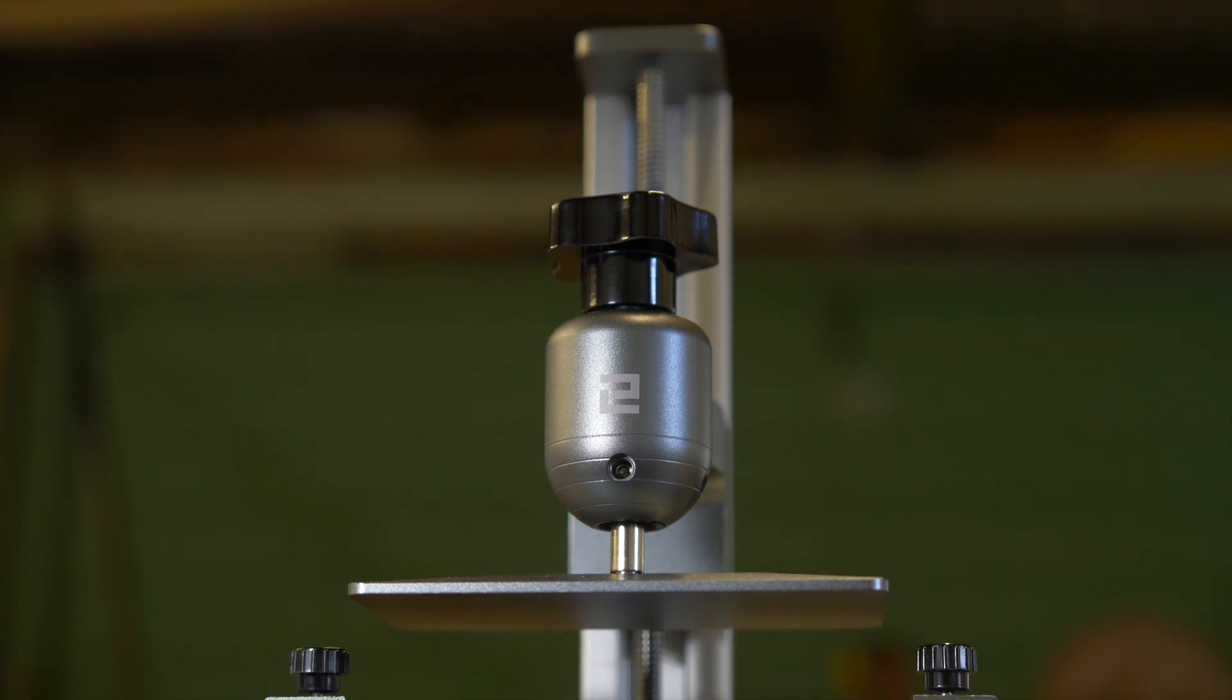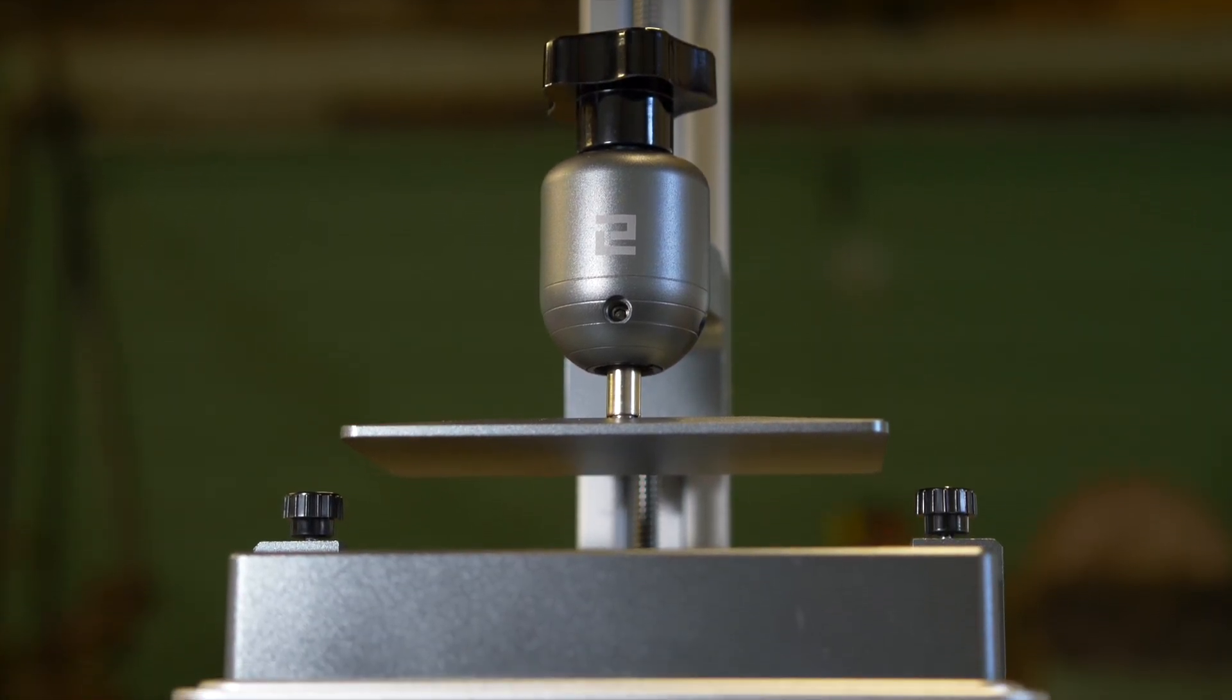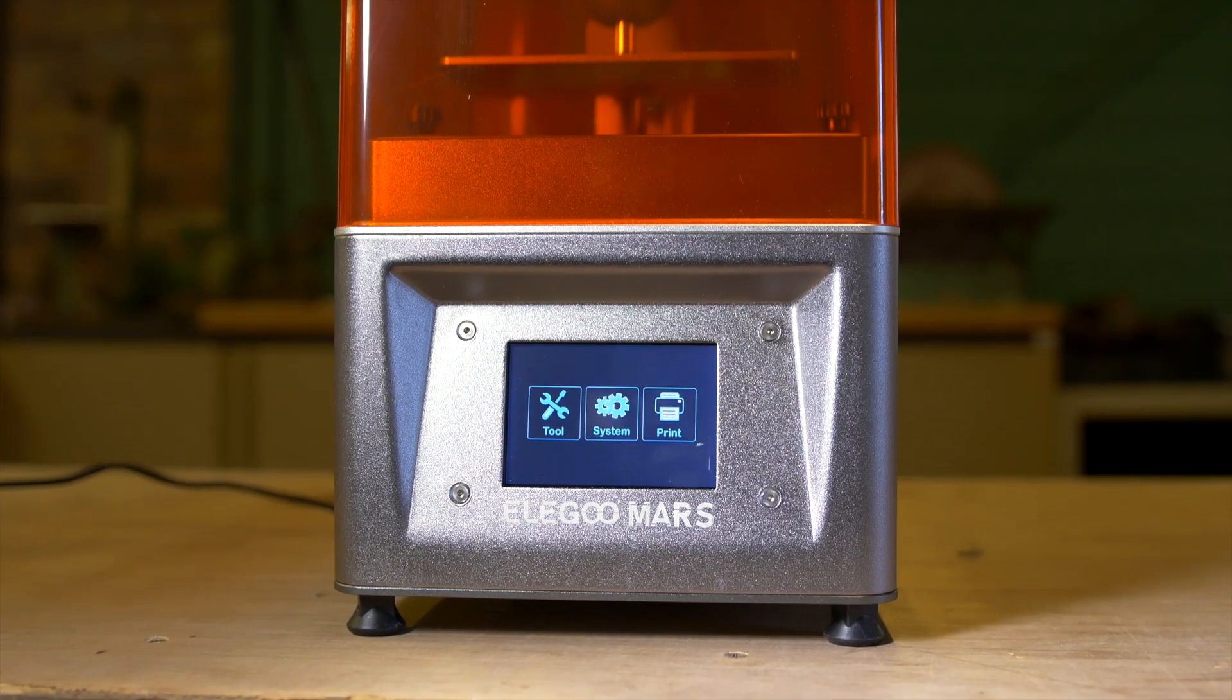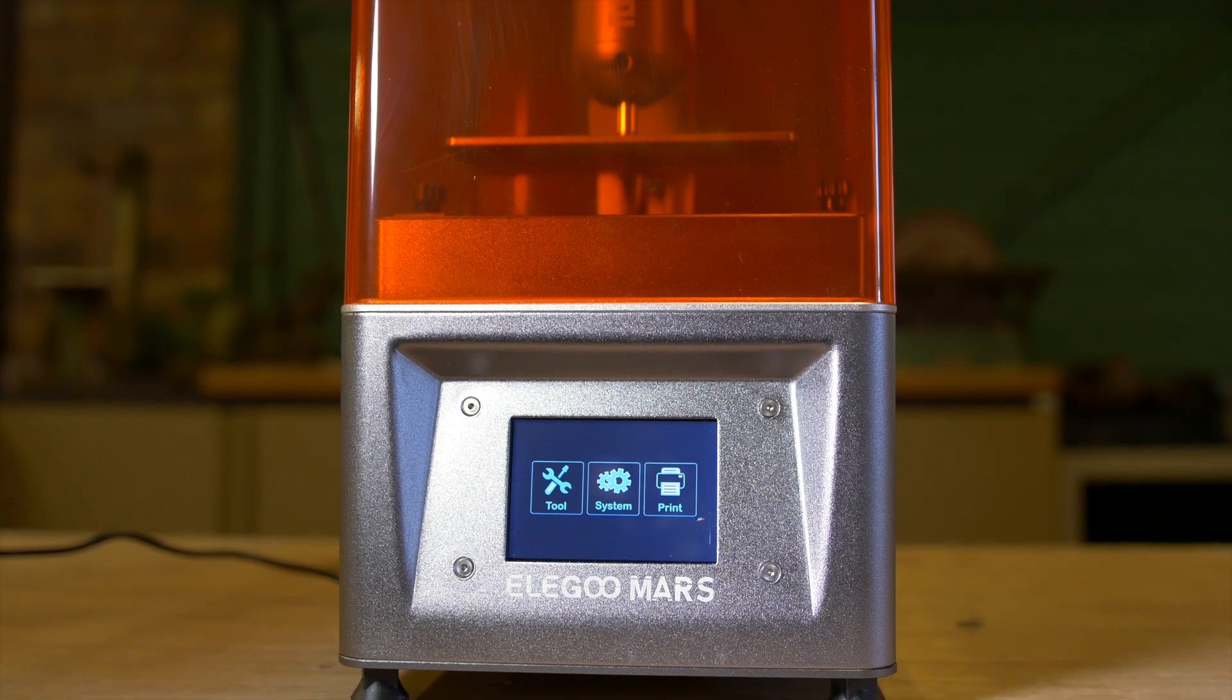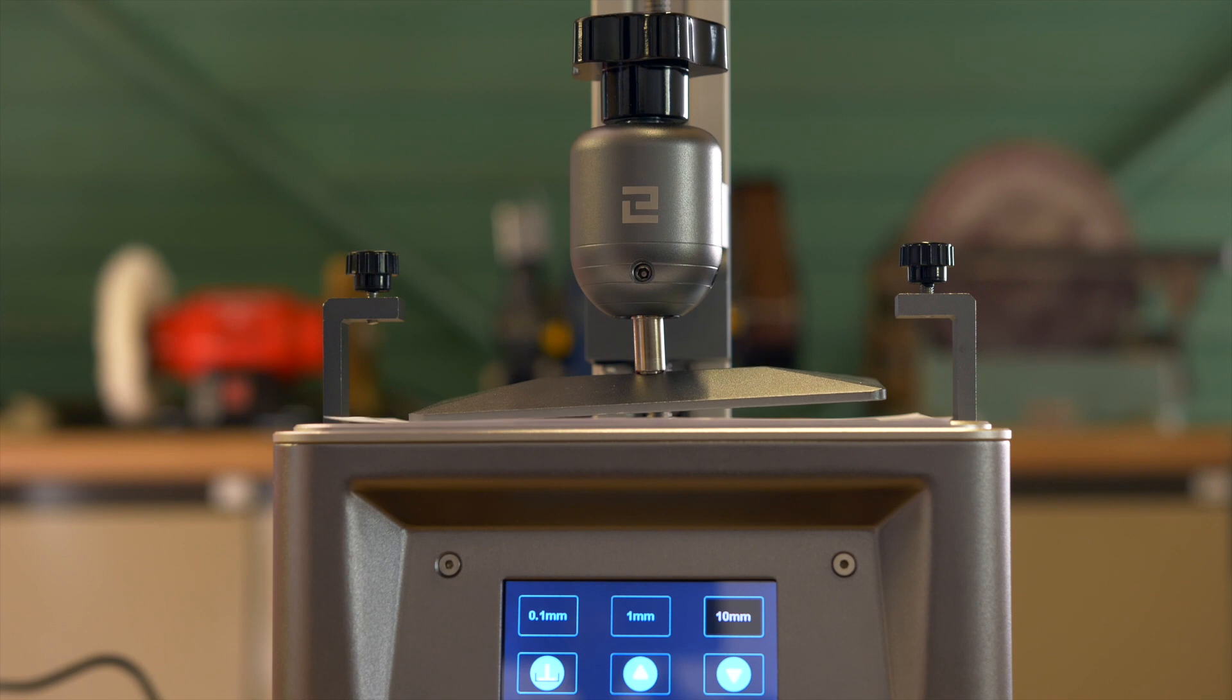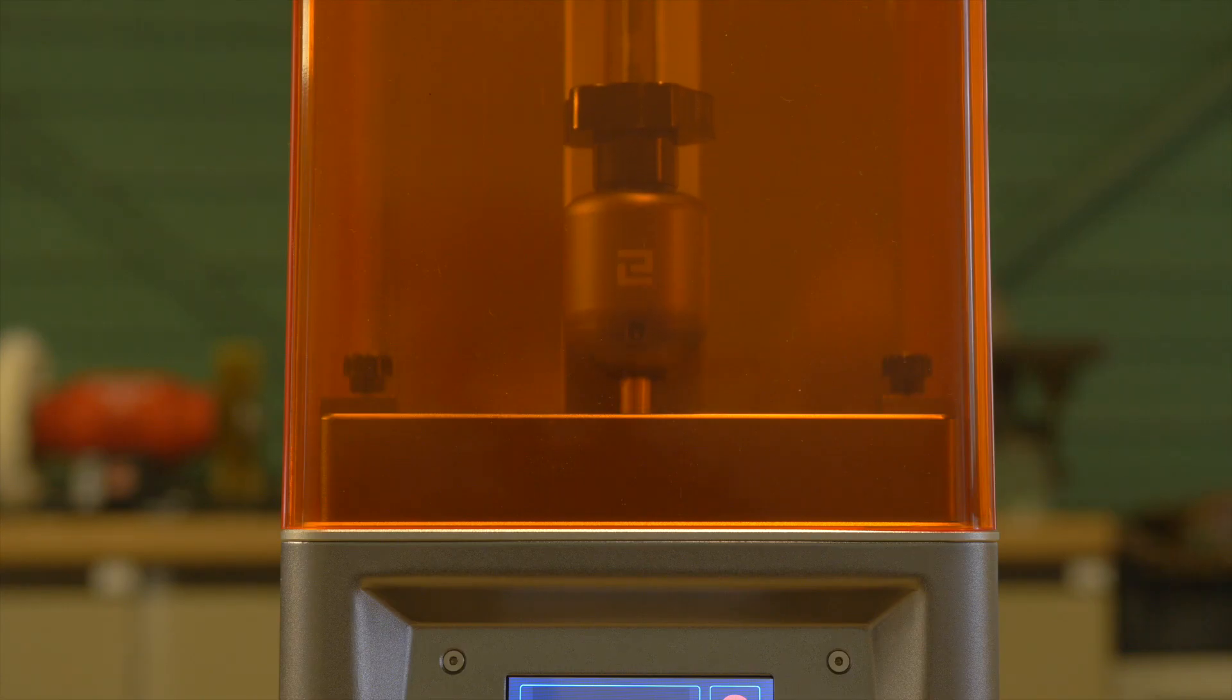The Elegoo Mars is a stunning resin 3D printer. And while the price tag of $369 seems steep when compared to the range of affordable FDM 3D printers, it represents an excellent entry point into ultra high detail 3D printing. When you compare it to resin competitors such as the Formlabs Form 3, these machines can cost upwards of $3000, so $369 almost represents a bargain.